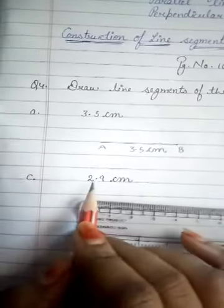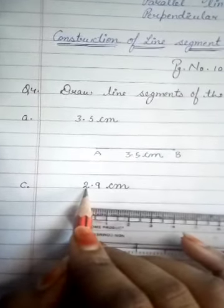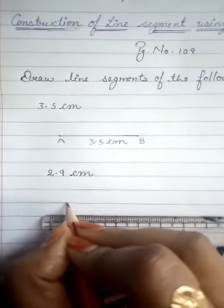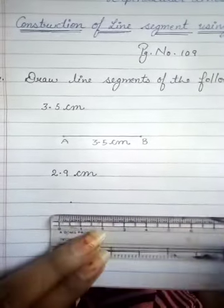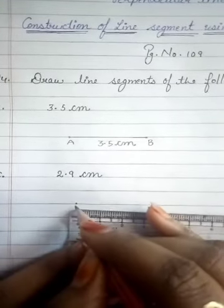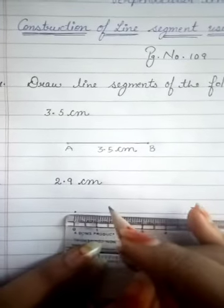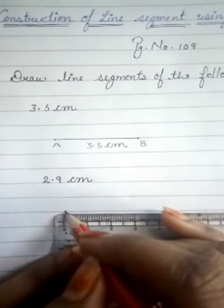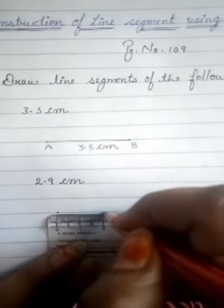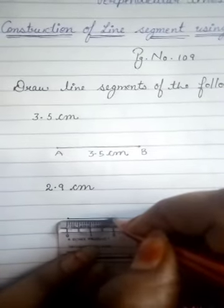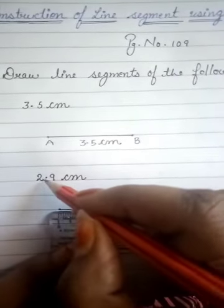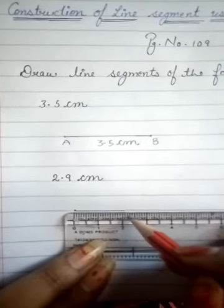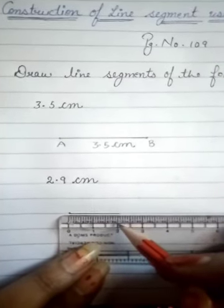This is part C of your book and the length given is 2.9 centimetres. Again we will first mark a point here. We will place 0 at this point. Now, 2 centimetres is here. So we will take it up to 2. Then, since it is 2.9, after 2 we will count the small lines up to 9: